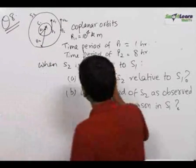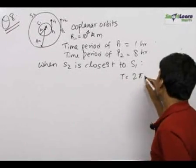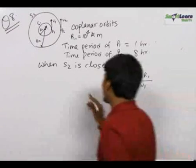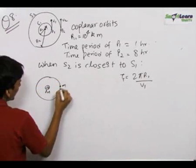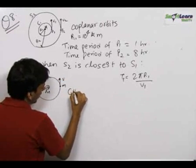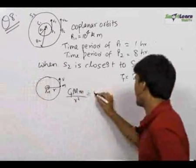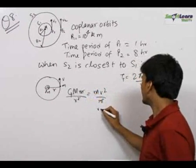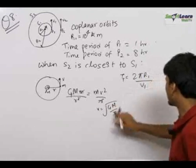Let us solve this question. We know that the time period is equal to 2πR1 upon V1 for the first satellite. In general, the time period is equal to 2πR upon V. Consider a planet M and an object revolving around it with speed V. We can write GMm/R² = Mv²/R, therefore V = √(GM/R), where M is the mass of the central planet.